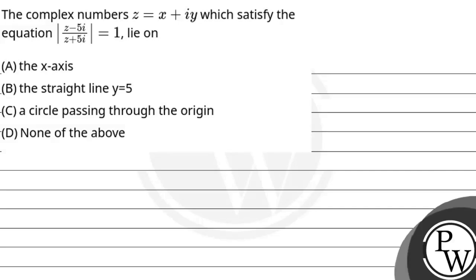Let's read this question. The complex number z equals x plus iy satisfies the equation: magnitude of z minus 5i upon z plus 5i equals 1. The options are: option A, the x-axis; option B, the straight line y equals 5; option C, a circle passing through the origin; and option D, none of the above.